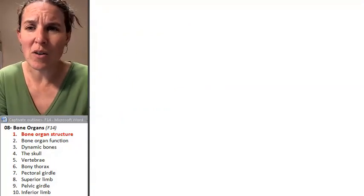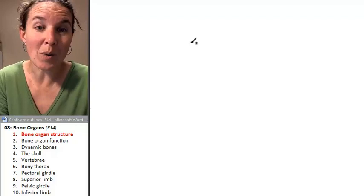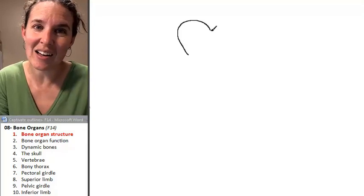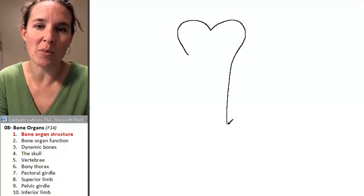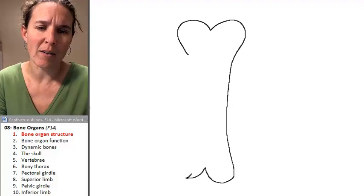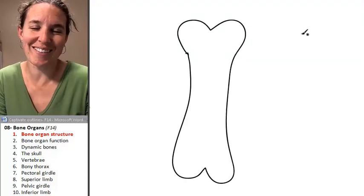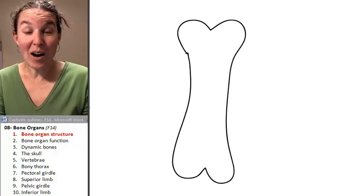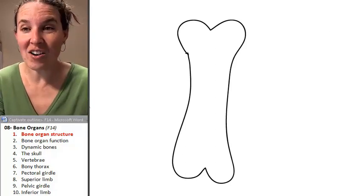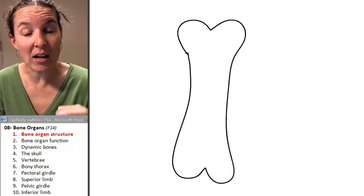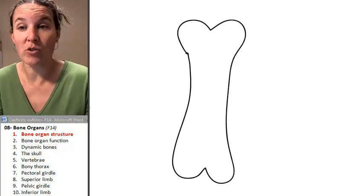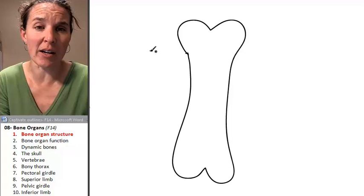So I'm going to draw you a picture of a bone organ, and here it is right about here. You're going to be so impressed with my bone organ. Right? Isn't it beautiful? Of course, there are specific areas of a long bone, which is what I've drawn for you here, and we're going to label those areas.